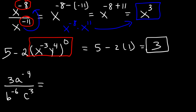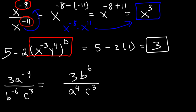Now for the next example, we don't have any common base, so there's nothing to add or subtract. All we need to do is get rid of the negative exponents. A has a negative exponent, so if we move A to the bottom, the negative 4 will change to a positive 4. B has a negative exponent; if we move it to the top, negative 6 will now become positive 6. C is already positive, so we're going to keep it in the same position. So this is the answer for the third one.